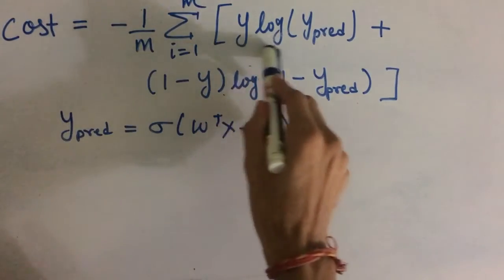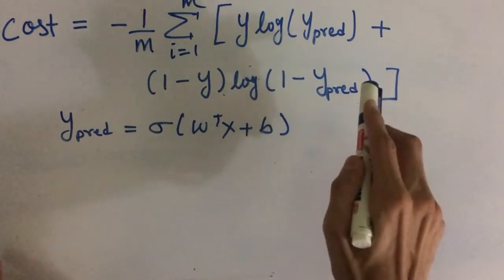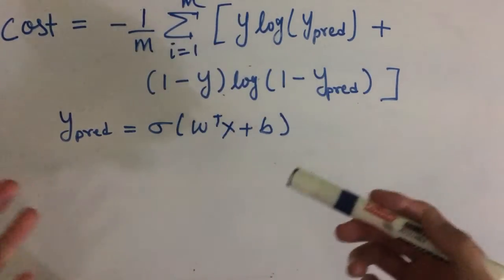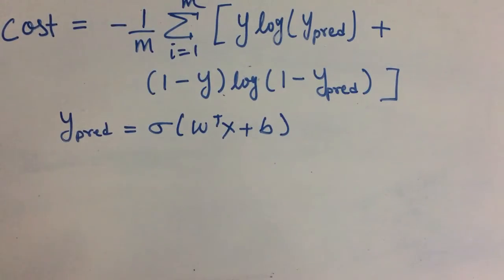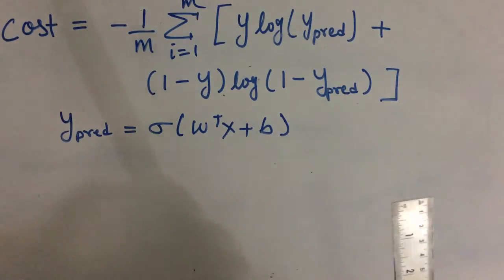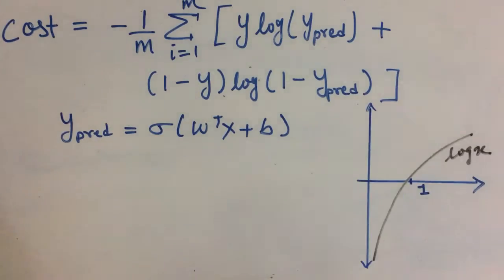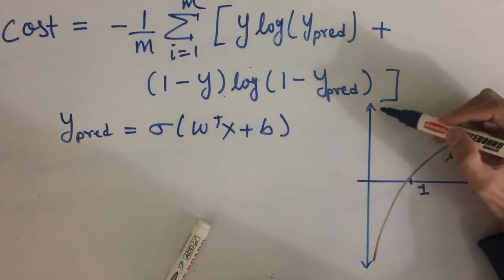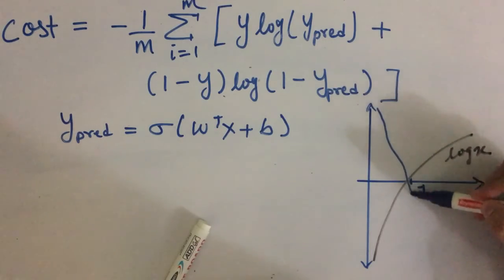Now this thing here, this much will represent the error for one observation. Now how does this thing represent the error? Let us take a closer look. When we plot a graph of logarithm, it looks something like this. Now as we also have a minus sign here, let us plot the graph of minus of log x which will look something like this.